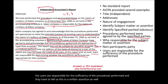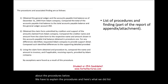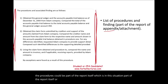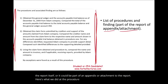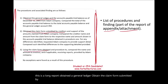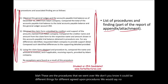We have to explain the procedures below. The procedures could be part of the report itself, as in this situation, or part of an appendix or attachment to the report. Here's what we did — the procedures and associated findings are as follows. Obtain a general ledger; obtain the claim forms submitted by creditors; using the claim form obtained, perform the procedures. These can be different things for different agreed-upon procedures. We would state that no exceptions were found as a result of these procedures.